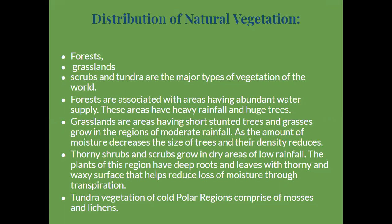Thorny shrubs grow in dry areas of low rainfall. The plants of these regions have deep roots and leaves with thorny and waxy surfaces that help reduce loss of moisture through transpiration. Examples include cactus, babul, and similar shrubs.